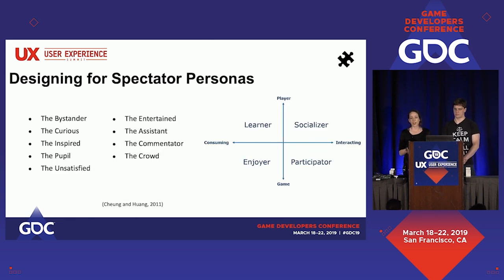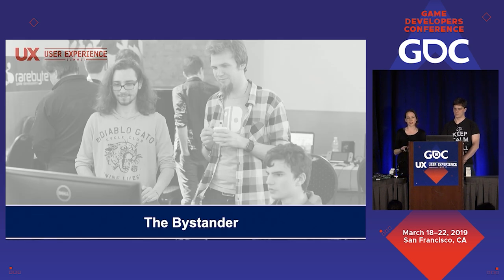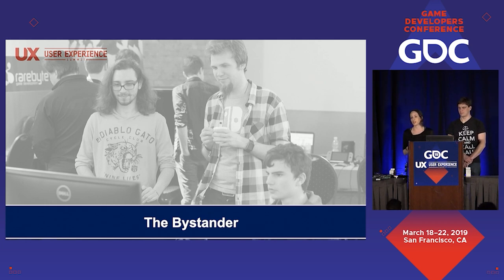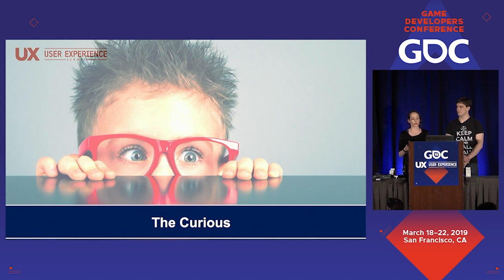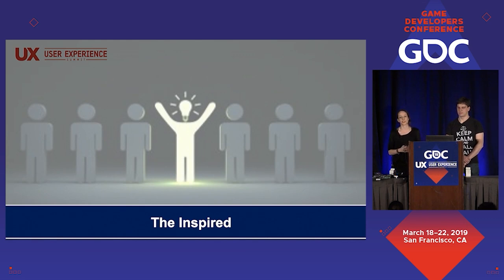When we create games, it's always important to think about the different personas we're designing for. The same can be done for spectators. The bystander is someone not yet very interested, who just happens to be there — uninformed or uninvested. However, if something engaging happens, like some drama or excitement, the bystander can become the curious one, who is suddenly interested in the game and wants to learn more. It starts with a small fascination and they eventually start watching more. The curious one can then become the inspired, who feels like 'that's a cool game, I also want to play it' and would go to Steam and buy the game after the stream.